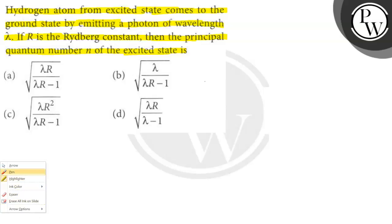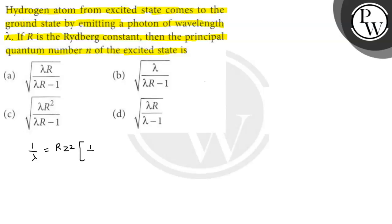First of all, we know that the wavelength of the emitted photon is given by: 1/λ = R · Z² · (1/n1² − 1/n2²). Here R is the Rydberg constant, Z is the atomic number, and n1 and n2 are the orbital quantum numbers.